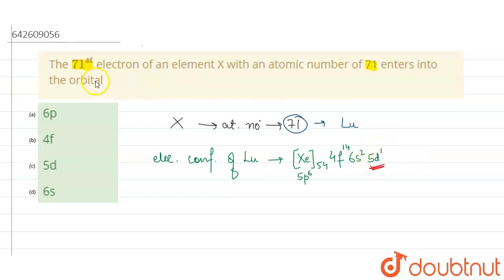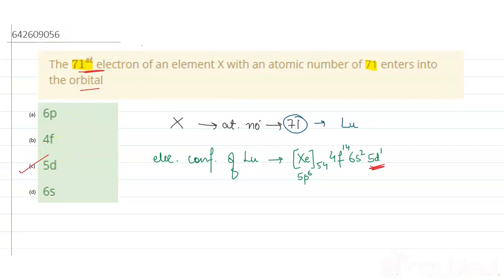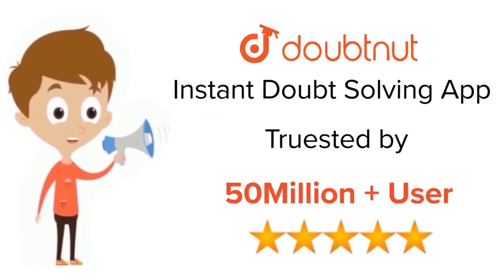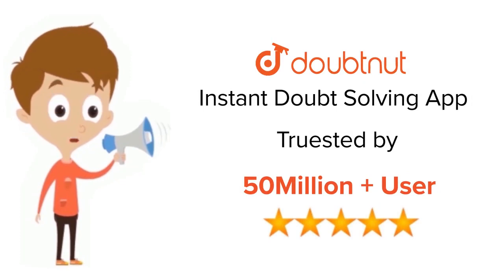So the answer to this question is that the 71st electron enters the 5d orbital, which is option C. Thank you. For class 6 to 12th, IIT-JEE, and NEET level — trusted by more than 5 crore students, download the DoubtNut app today.